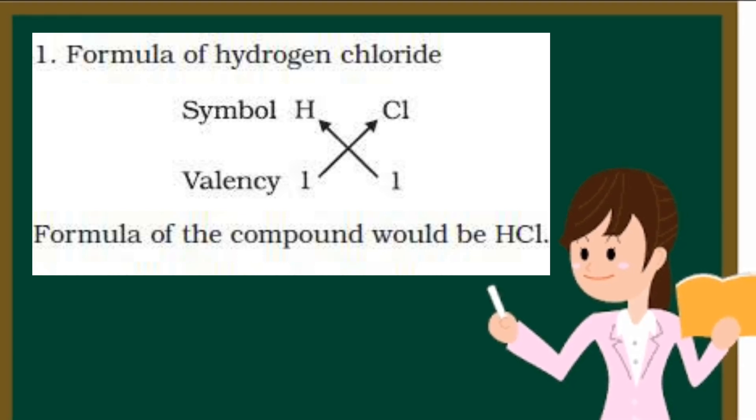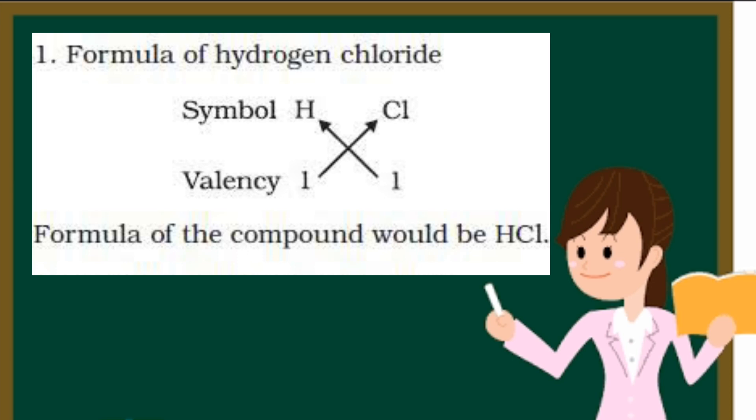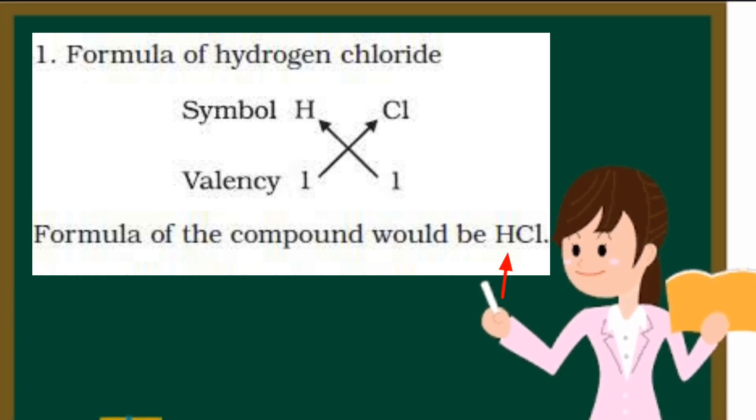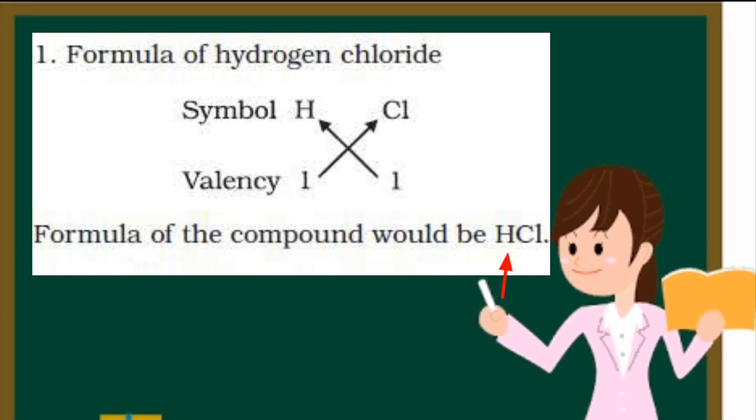Formula of HCl: H valency 1, Cl 1. Just cross multiplication, we are having HCl of hydrogen chloride.